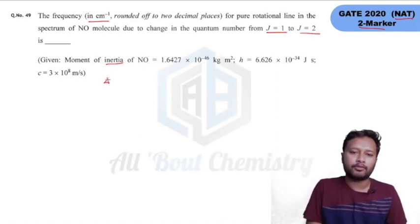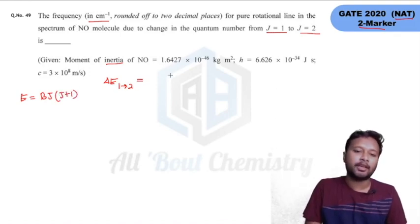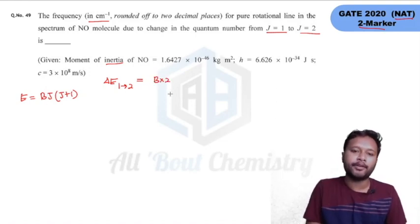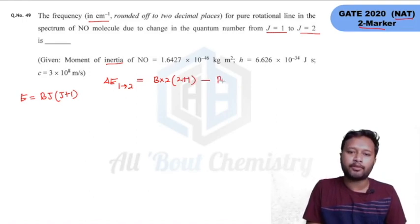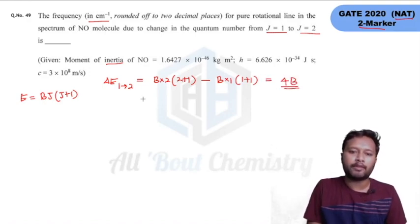To solve this, you first need to calculate ΔE from J=1 to J=2. The energy formula for a pure rotational line is given by E = BJ(J+1). For the second state (J=2): E = B·2·(2+1) = 6B. For the first state (J=1): E = B·1·(1+1) = 2B. So the energy difference ΔE = 6B − 2B = 4B.